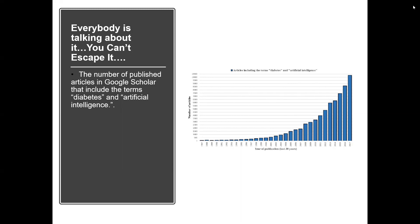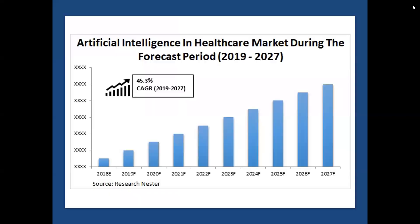The number of published articles on Google Scholar including the terms 'diabetes' and 'artificial intelligence' has grown enormously. In 1997, there were hardly a few — maybe one or two or ten. But in 2017, that had increased to 10,600 published articles. The AI in healthcare market also had significant growth during the forecast period from 2019 onward.